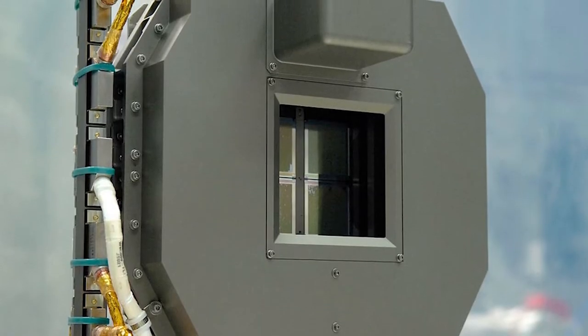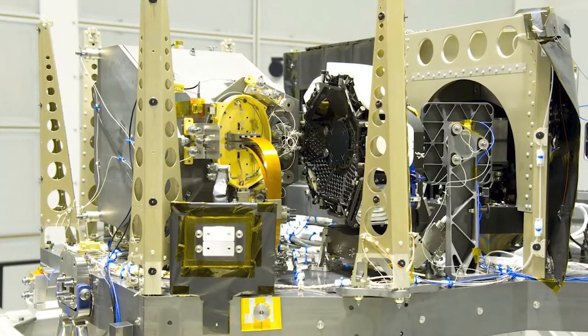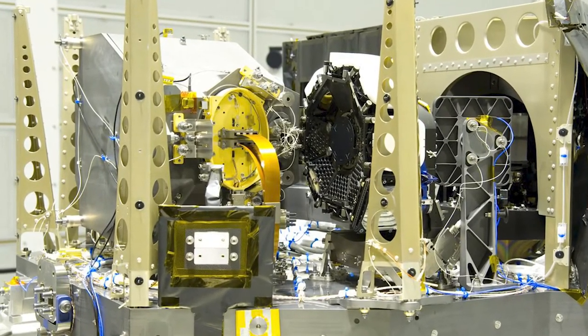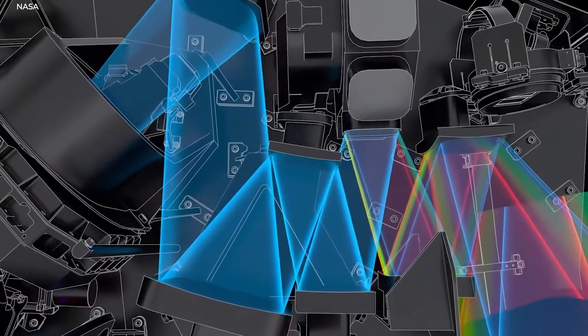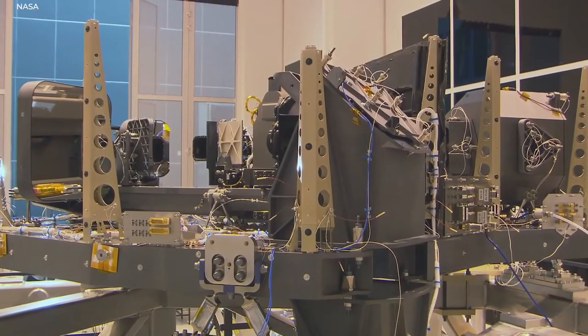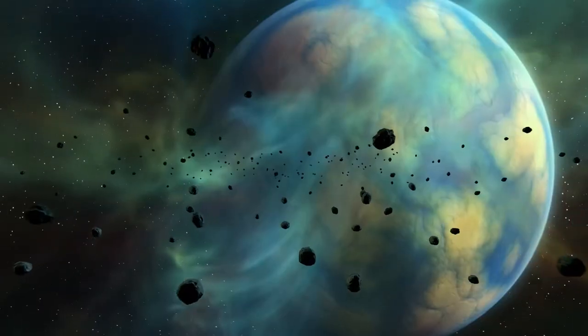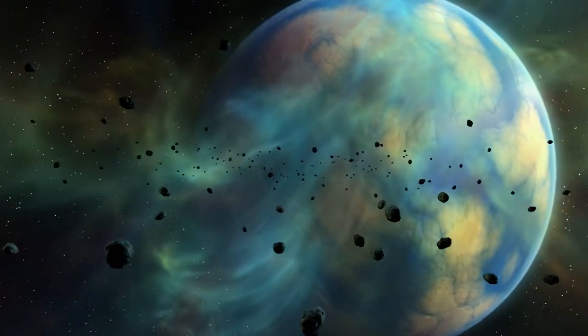Second, there is the near-infrared spectrograph NIRSPEC, which looks at the same wavelengths of light as NIRCAM, but instead of being a camera, it is a spectrograph, which means it disperses light and divides it into a spectrum. Analyzing this can reveal the physical properties of objects such as mass, temperature, and chemical composition.